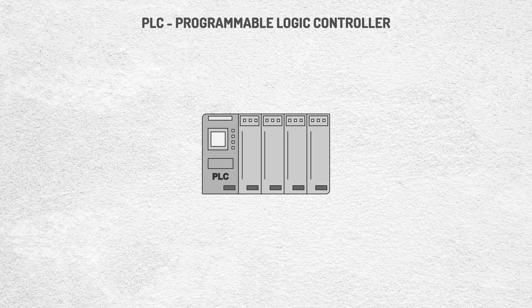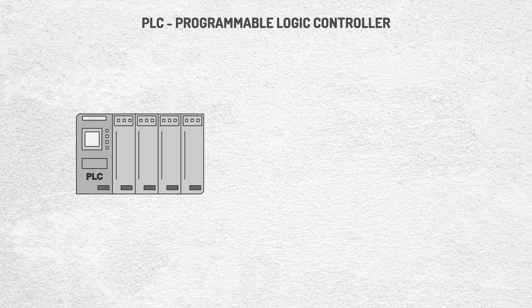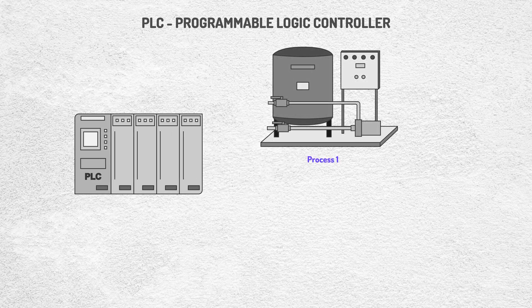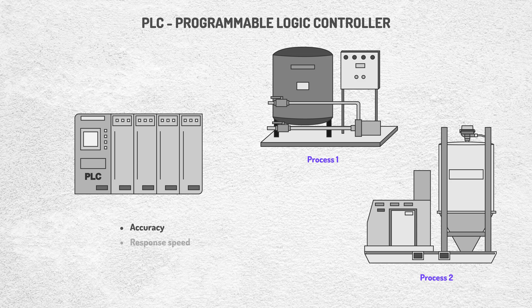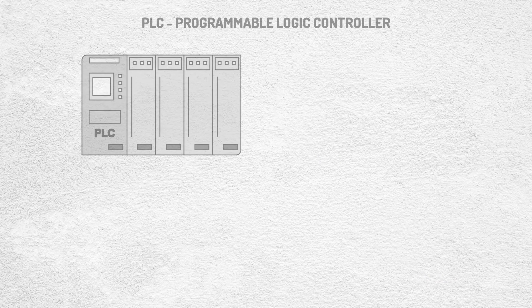The PLC, or Programmable Logic Controller, is fundamental in industrial automation because it allows processes to be controlled precisely, quickly, and flexibly. Its ability to receive signals from sensors, make logical decisions, and activate outputs in real time makes it the brain of many control systems. Unlike traditional relay-based systems, the PLC is programmable, adaptable to changes, easy to troubleshoot, and highly reliable.